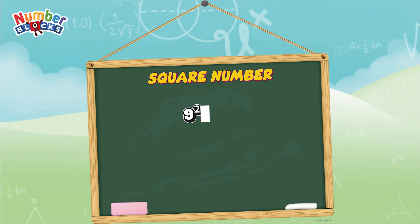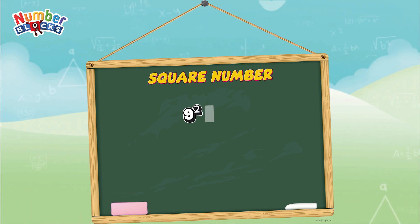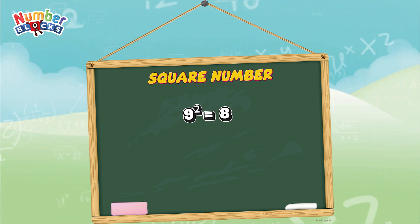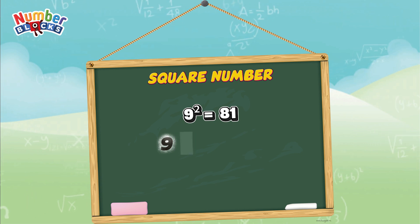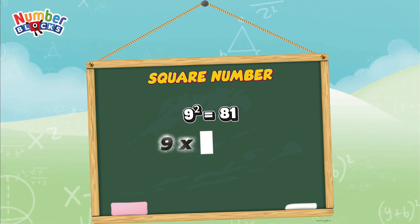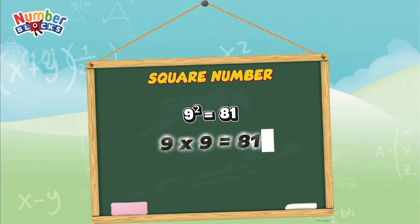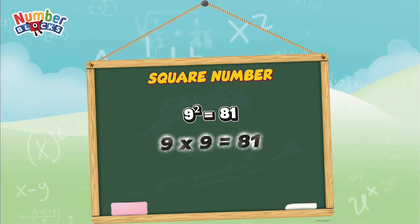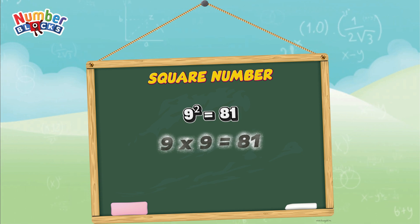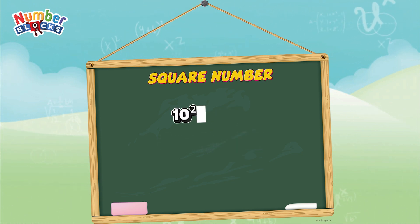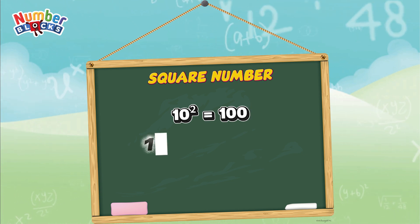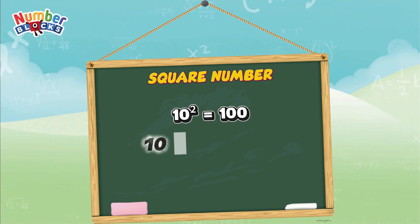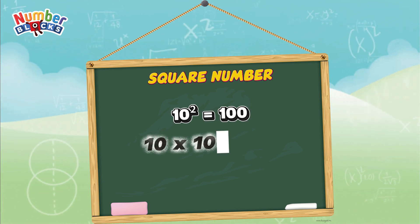Nine squared is equals to eighty-one, or nine multiplied by nine, is equals to eighty-one. Ten squared is equals to one-hundred, or ten multiplied by ten, is equals to one-hundred.